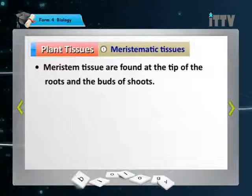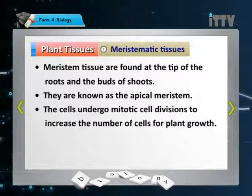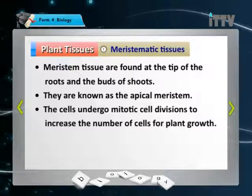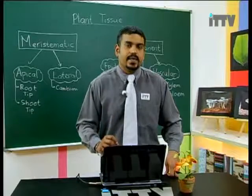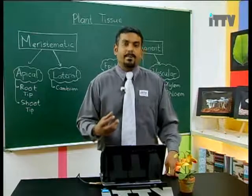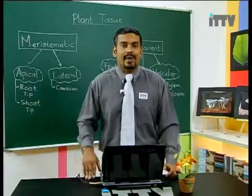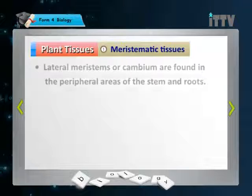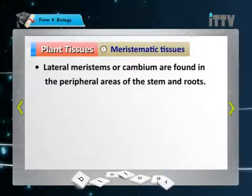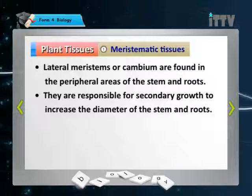Meristematic tissues are found at the tip of the roots and at the buds of shoots — these are known as the apical meristem. The cells undergo mitotic cell division to increase the number of cells for plant growth. During mitosis, each plant cell divides into two cells, allowing the cells to multiply. The lateral meristems, or cambium, are found in the peripheral areas of the stem and roots.